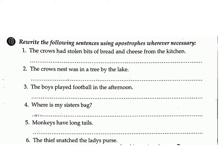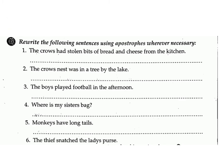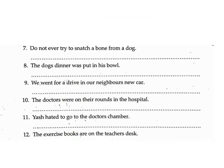Exercise B: Rewrite the following sentences using apostrophes wherever necessary. 1. 'The crows had stolen bits of bread and cheese from the kitchen.' Answer: No change. 2. 'The crow's nest was in a tree by the lake.' Answer: 'The crow's nest was in a tree by the lake.' 3. 'The boys played football in the afternoon.' Answer: No change. 4. 'Where is my sister's bag?' Answer: 'Where is my sister's bag?' 5. 'Monkeys have long tails.' Answer: No change.